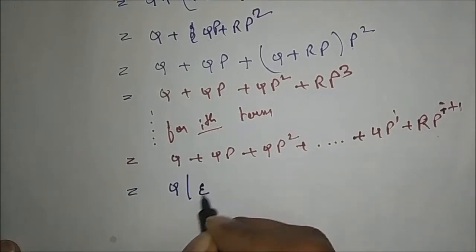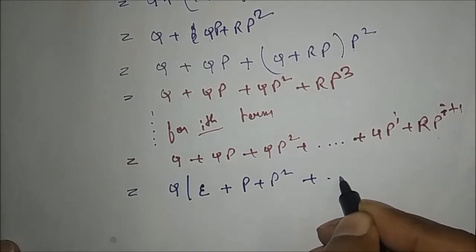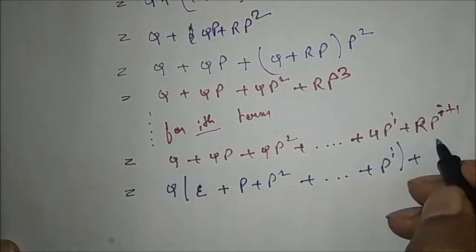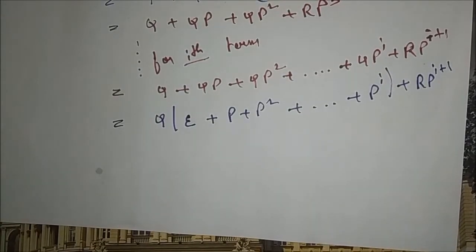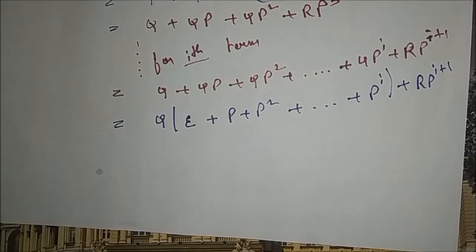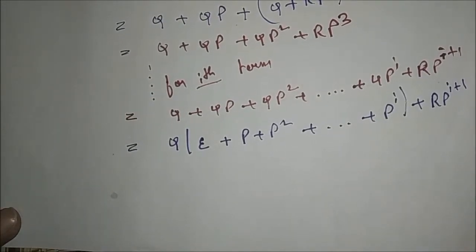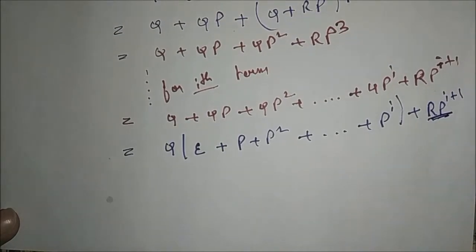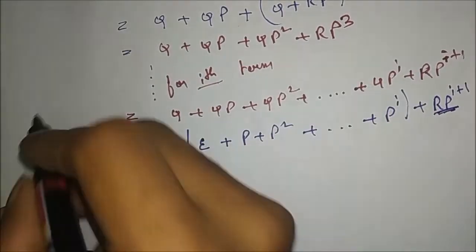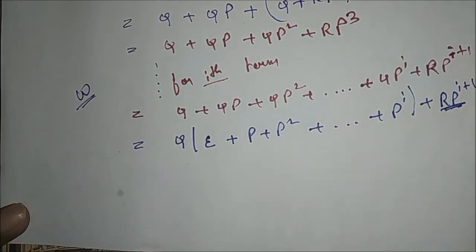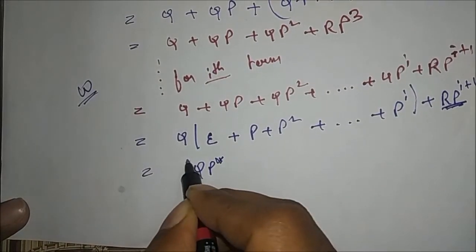Now if we take Q as common, we get Q times (epsilon + P + P squared + ... + P^i) plus RP^(i+1). Our main task is to get QP*. Since P is not containing any null value, RP^(i+1) has no string of length less than i+1. And if W be a string of length i, then we can write this equation as QP*.